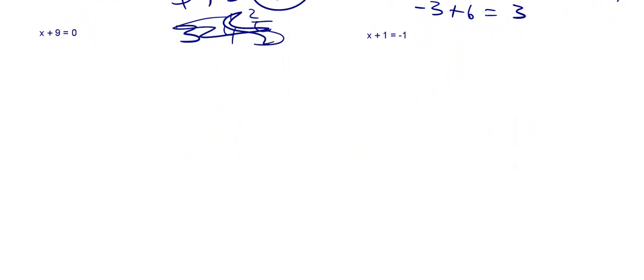So let's look at our next example here. x plus 9 is equal to 0. Come back, x plus 9. Come back, come back. All right, I won't erase it. You didn't like me to erase it. You've got x plus 9.